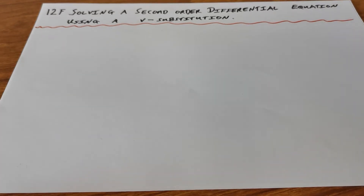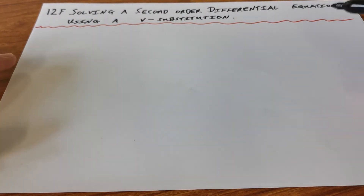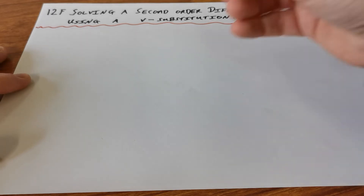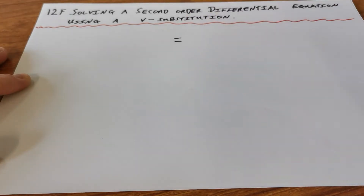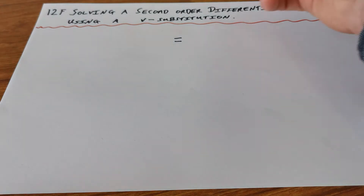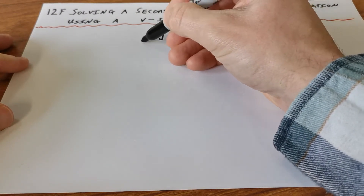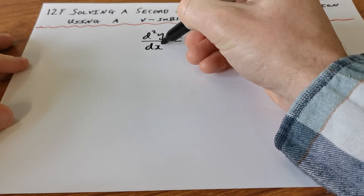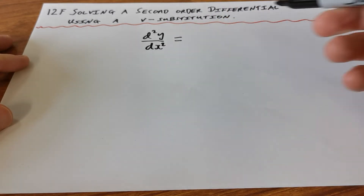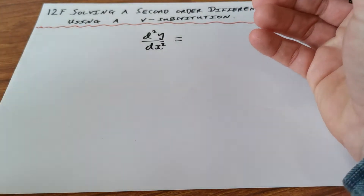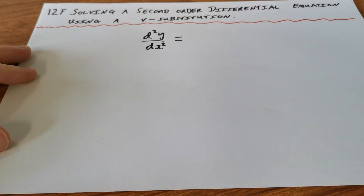In this lesson I'm going to look at solving a second-order differential equation using a V-substitution. A differential equation is just an equation that contains a derivative. It's a second-order differential equation if it contains a second derivative — d²y/dx² — so if it has a second derivative in it, then it's a second-order differential equation.